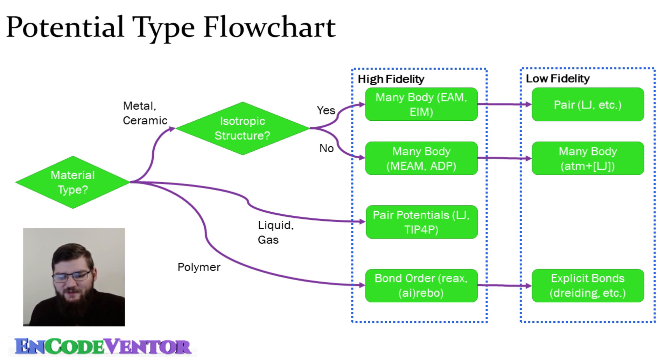When we start out, we need to know what material type are we trying to model? If you are modeling a metallic system or a ceramic system, there's another question that we need to ask. Are we modeling something with an isotropic structure? Basically, if something has an isotropic structure, we can simplify the potentials that we're using.